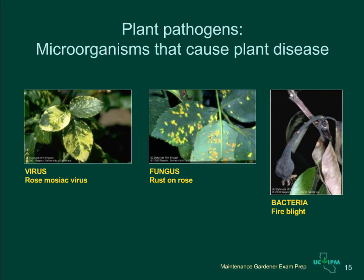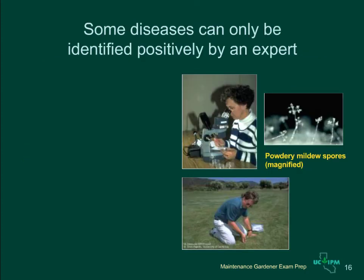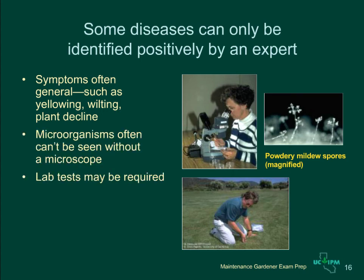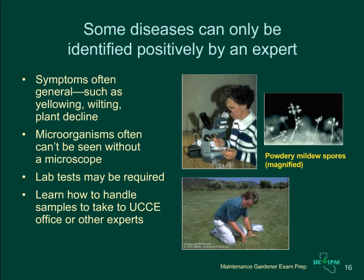Plant diseases can be caused by many microorganisms, including viruses, fungi, and bacteria. These disease-causing organisms are called plant pathogens. Symptoms vary greatly depending on the pathogen and the plant, but they may include leaf discoloration or distortion, powdery growth, and dieback of plant parts. Some pathogens attack plant roots, trunks, and crowns, causing wilting, dieback, or death. Because the microorganisms causing plant disease are so small, it's often difficult to identify the cause of the injury in the field. Some plant pathogens can only be seen with a microscope or may require a laboratory test to positively identify them. You may need to take your samples to your University of California Cooperative Extension office or to other experts to diagnose the cause. Learn how to handle samples for disease diagnosis.